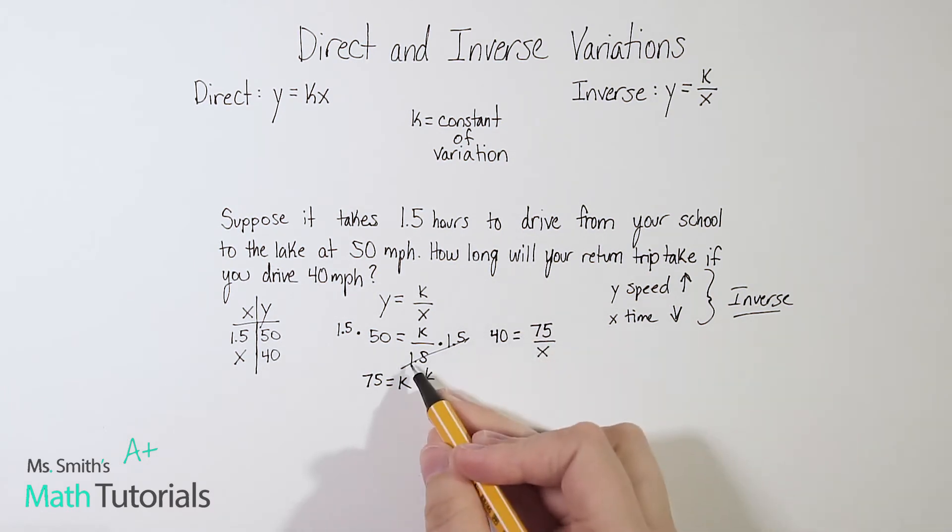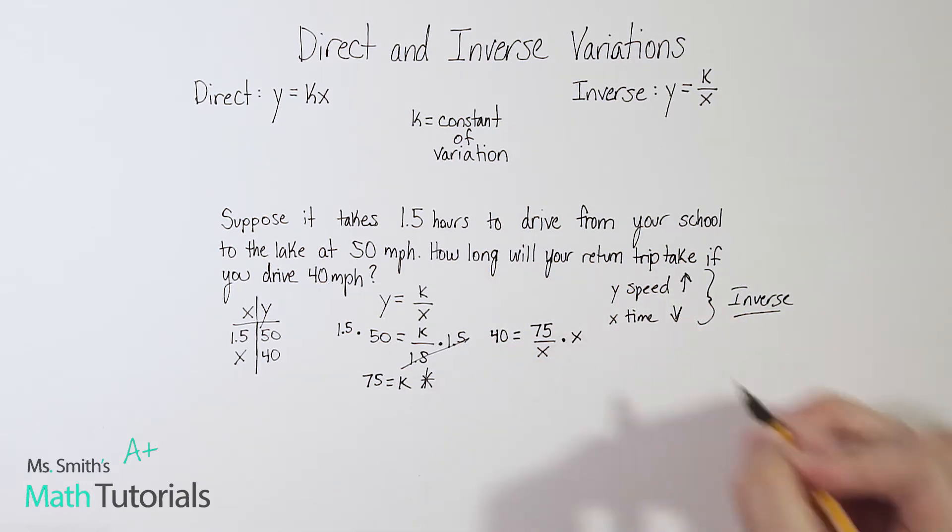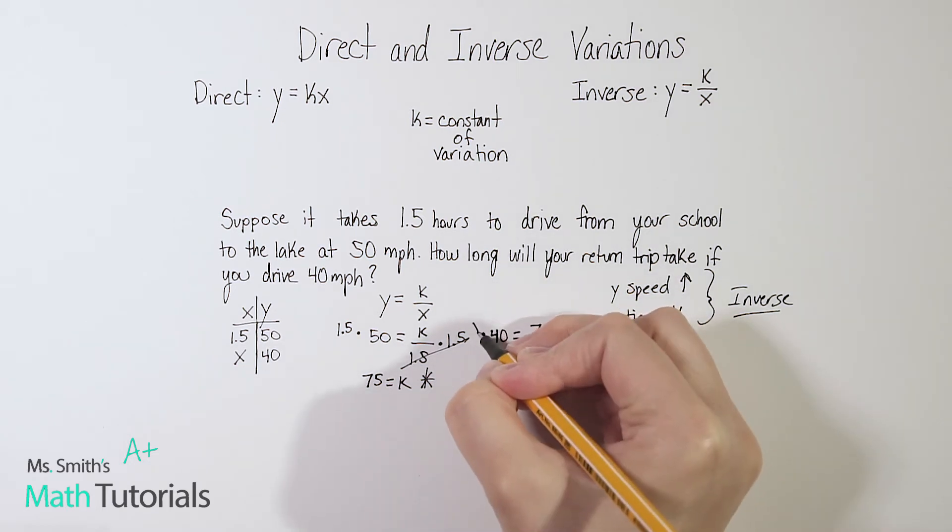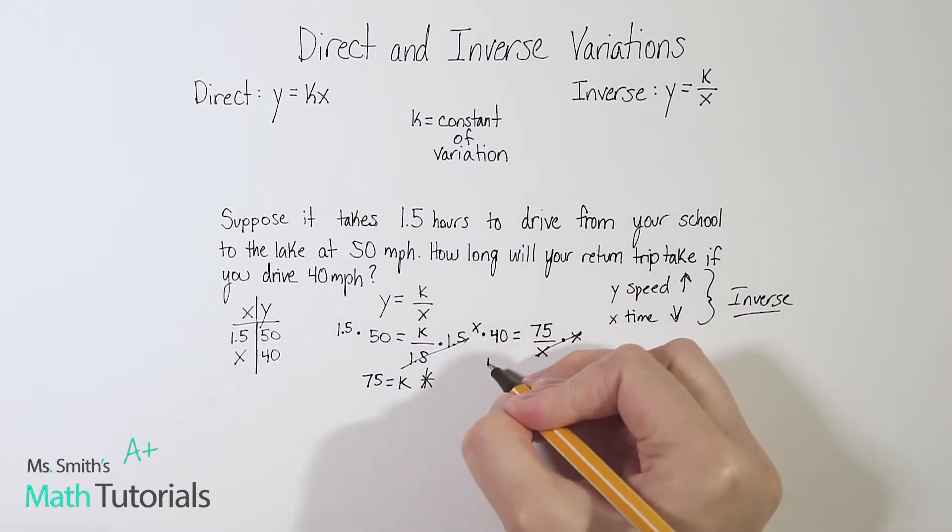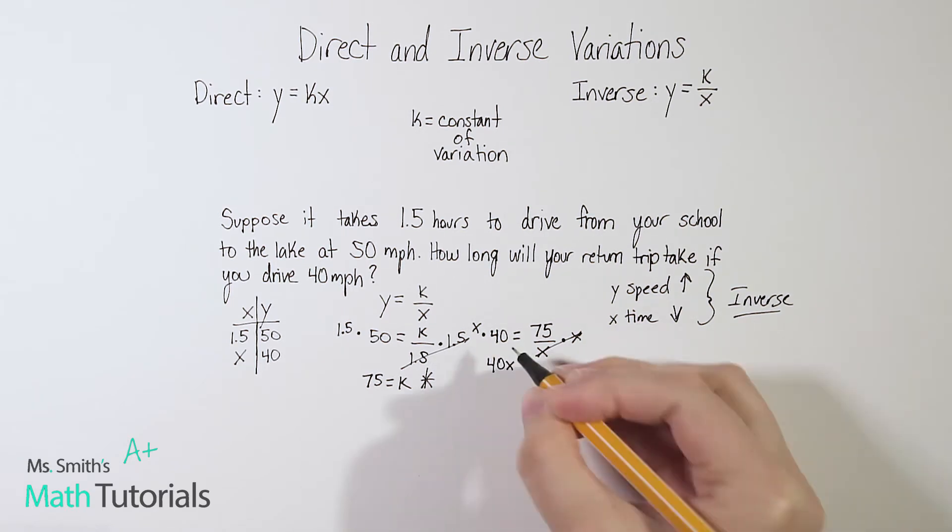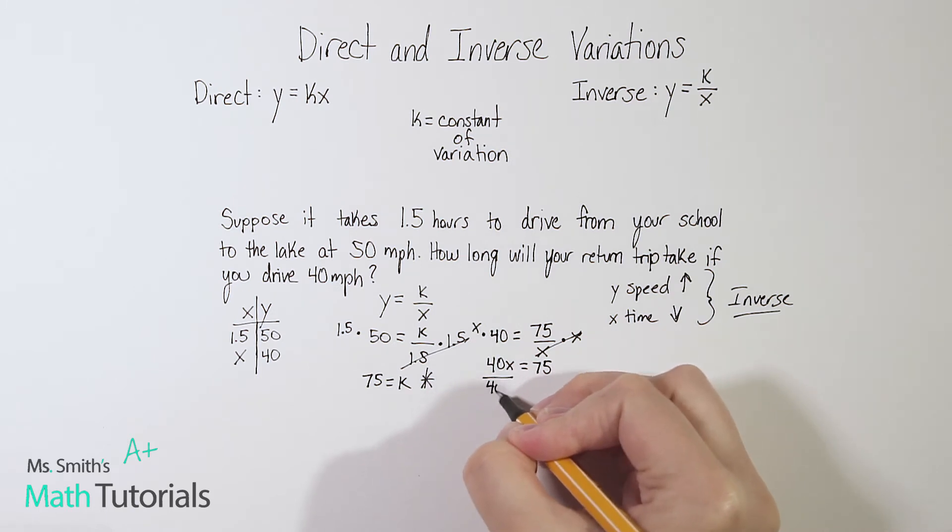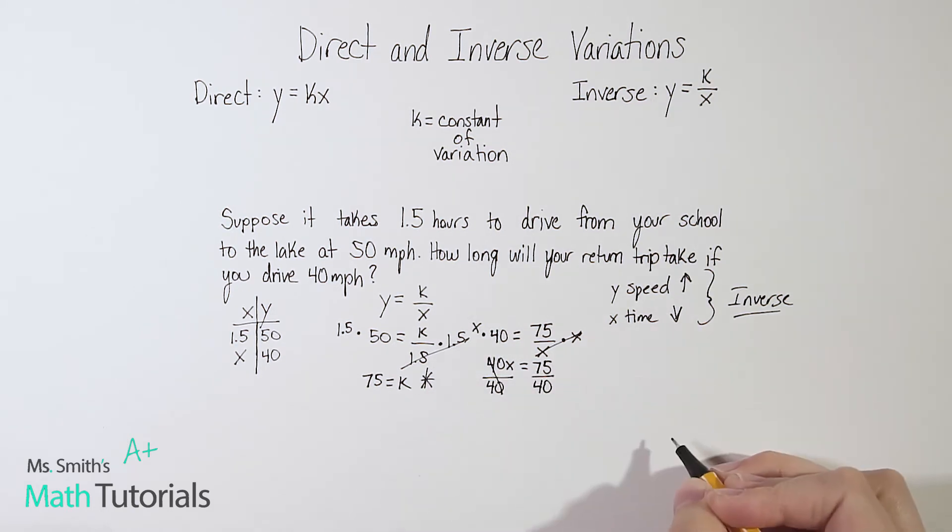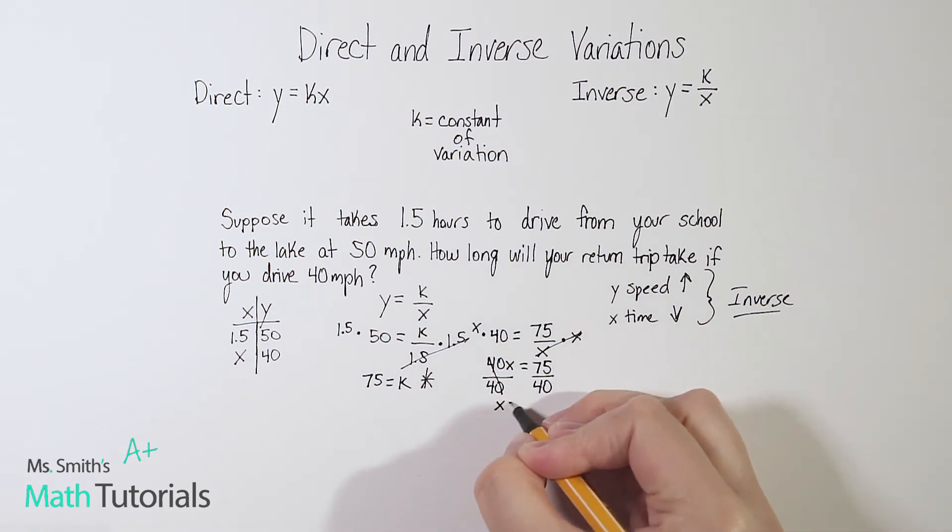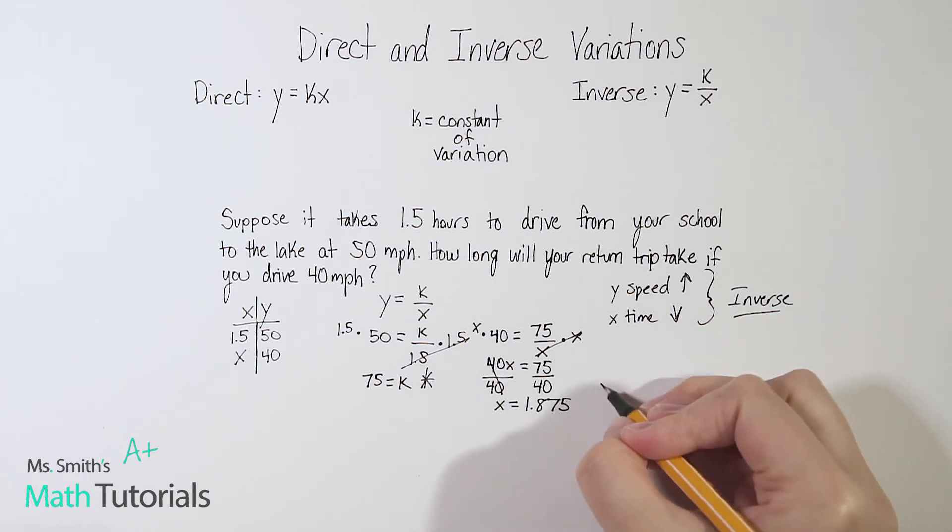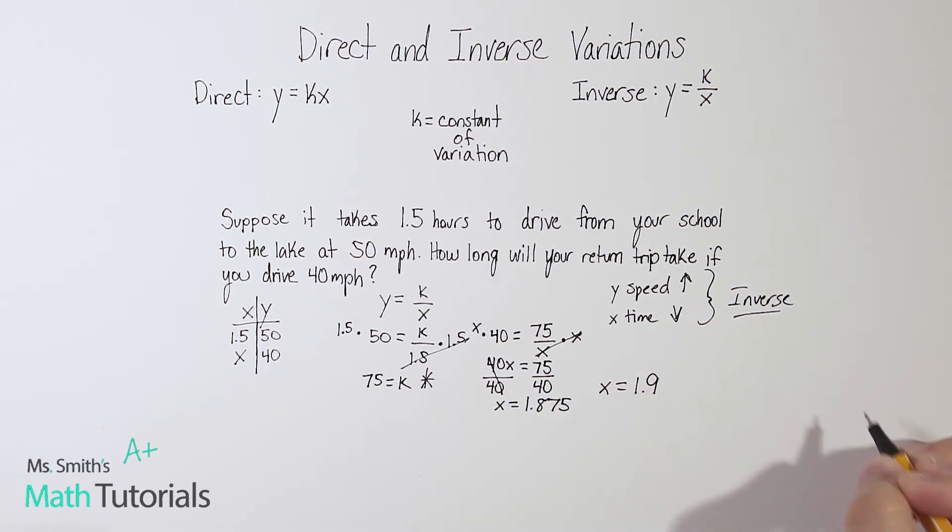Now to solve this using algebra, I'm going to use that same trick again. If I multiply by the denominator, it gets rid of the fraction. What I do to one side, I have to do to the other. Now 40 times x is just 40x equals 75. Now I do need to divide out. And 75 divided by 40 is going to give me 1.875. Okay, and we can round that to say x equals 1.9 hours.